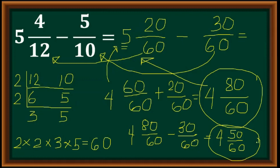A shortcut here is, since both numerator and denominator end in 0, we can cancel the zeros. So our final answer is 4 and 5 over 6.